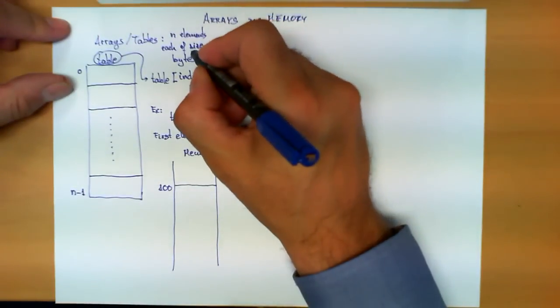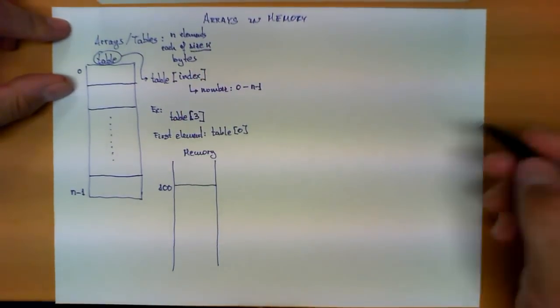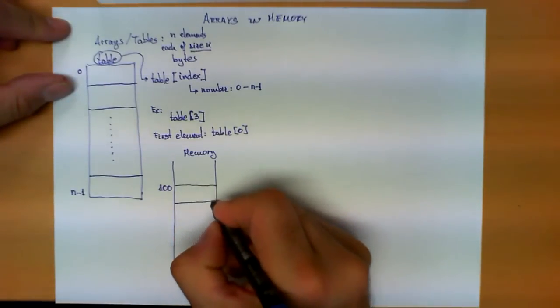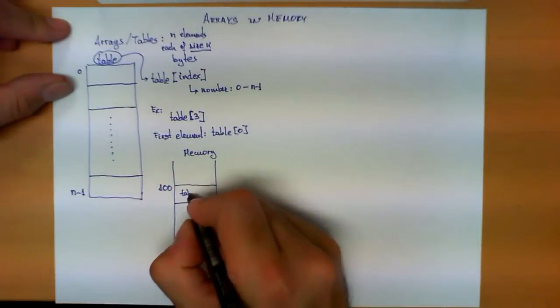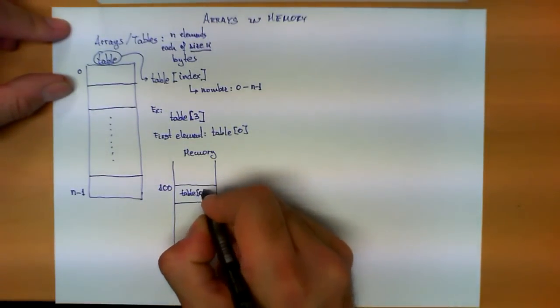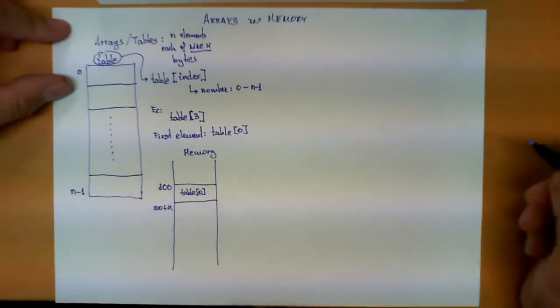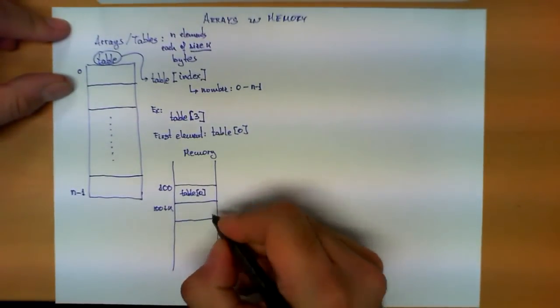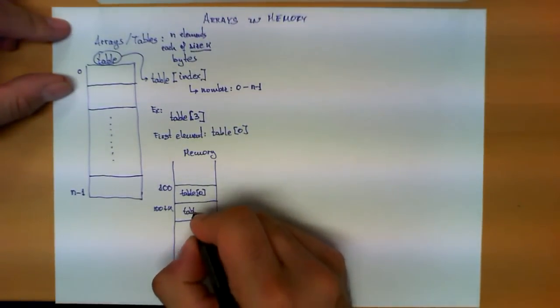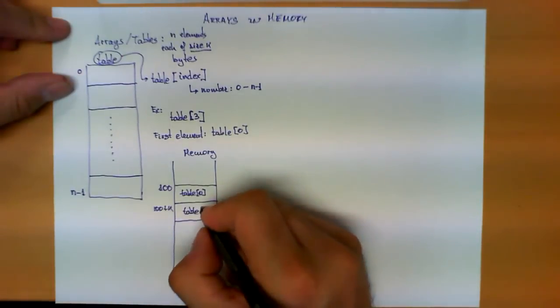Since we know that the table has elements of size k, the following element, this would be table of 0, will be stored in position 100 plus k. And we refer to that element as table, or whatever name we give to our array, of 1.